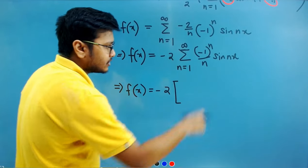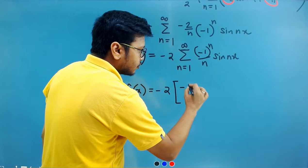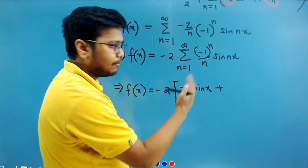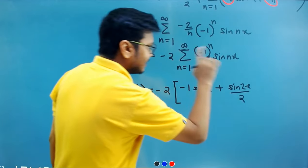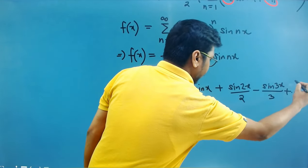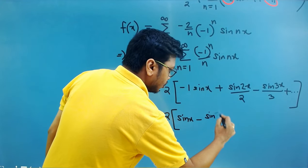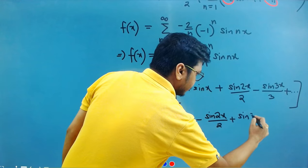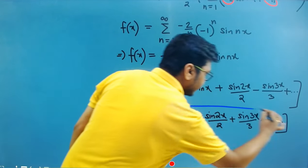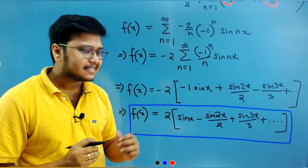Writing this as a series by taking −2 outside and expanding term by term: for n=1 we get −sin x, for n=2 we get +sin(2x)/2, for n=3 we get −sin(3x)/3, and so on. Taking the minus inside gives: f(x) = 2[sin x − sin(2x)/2 + sin(3x)/3 − …] continuing to infinity. This is the Fourier series of f(x) = x.